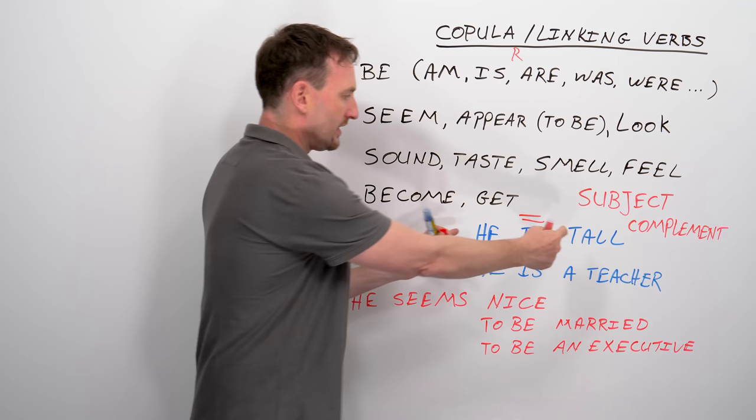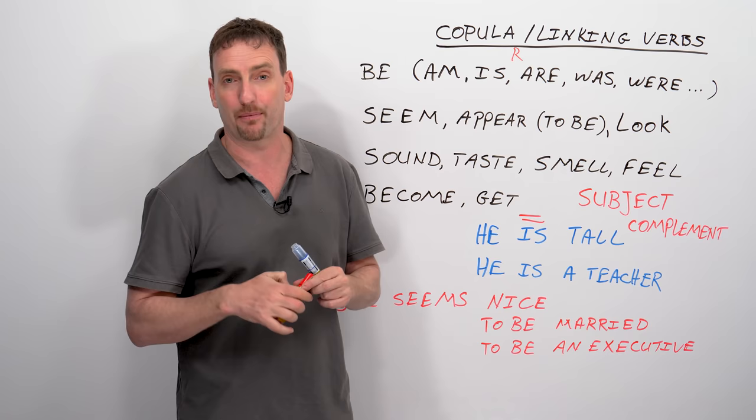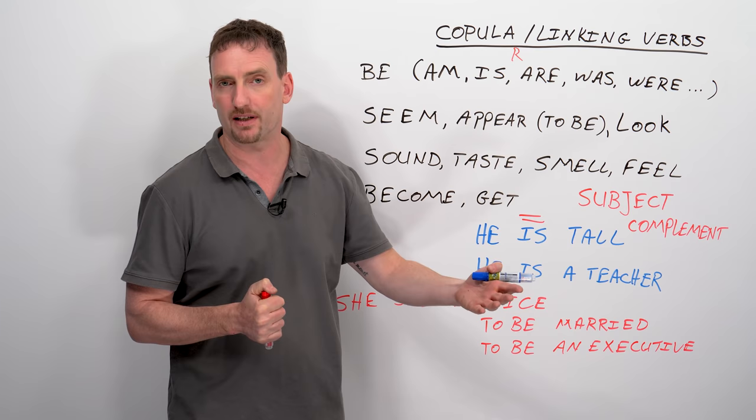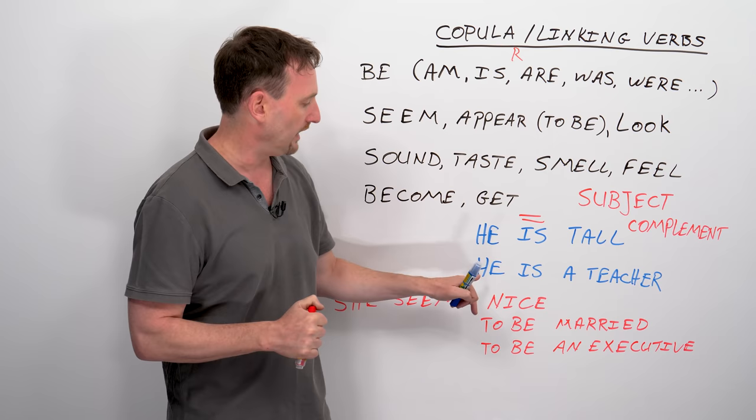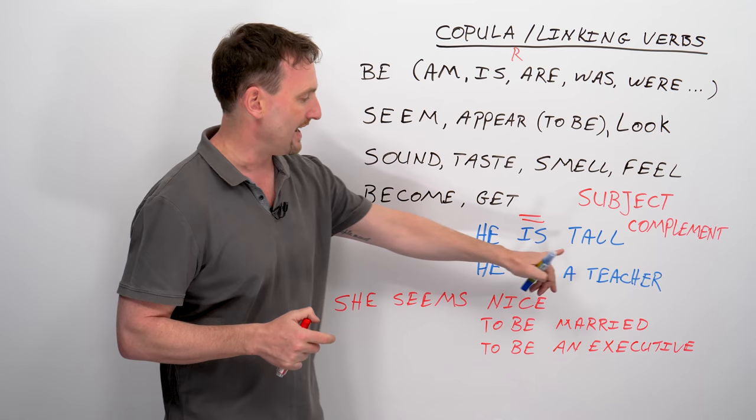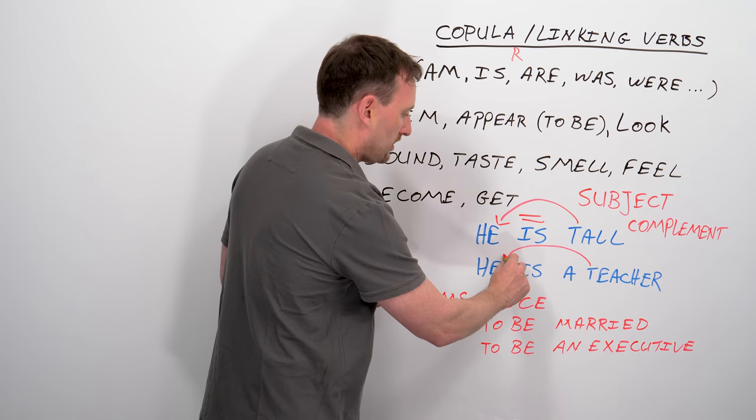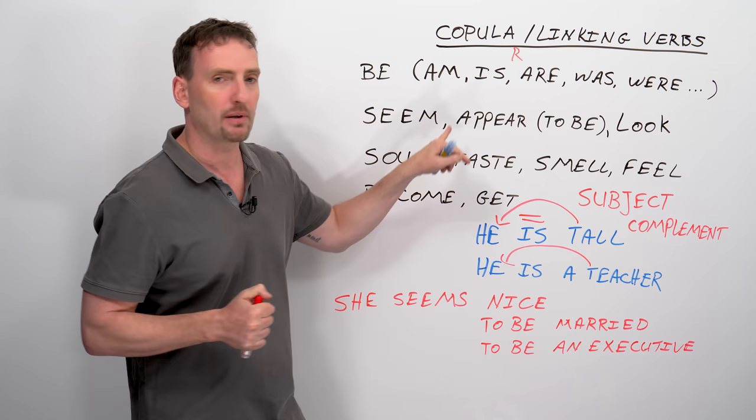So as an example, he is tall. So if you think about this sentence, a lot of people would think subject, verb, object. But tall is not an object to the verb is. Tall is the subject complement to the subject he. Essentially what this means is he, tall, same person, same thing we're focusing on. The be verb acts like an equal sign, showing that these two things are the same thing.